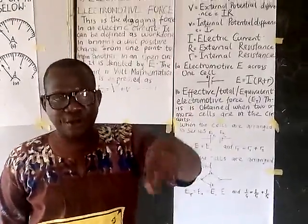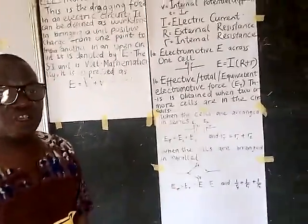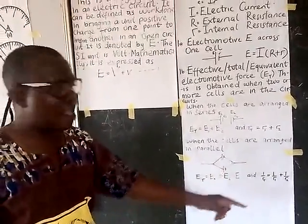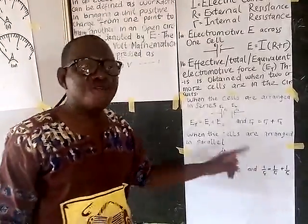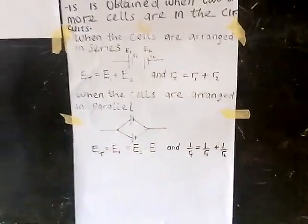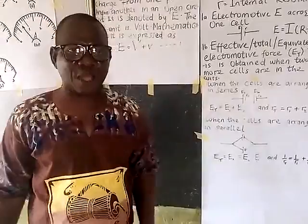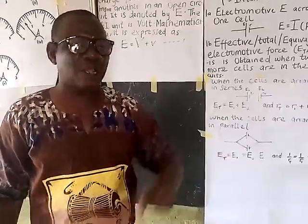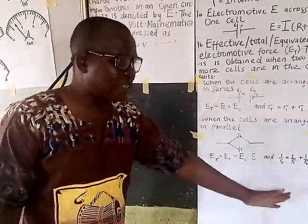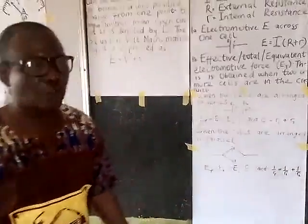For the internal resistance in parallel arrangement, the formula is different: 1/RT = 1/R1 + 1/R2 (and so on). The sum of the reciprocals of the internal resistances equals the reciprocal of the effective internal resistance. You then cross-multiply to make RT the subject of the formula.